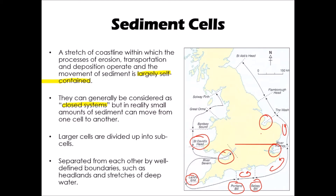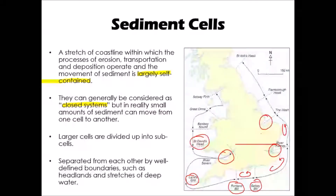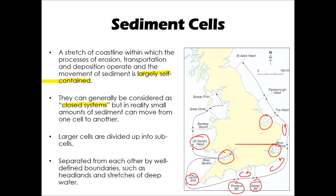We can also divide larger cells up into what we call sub-cells. So within the stretch of coastline between Portland Bill and Selsey Bill in the south of England, that is then divided up further into a series of smaller cells.